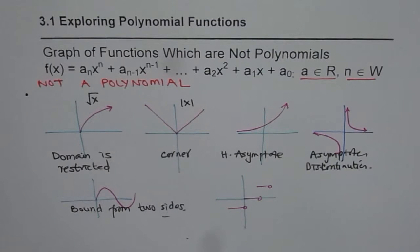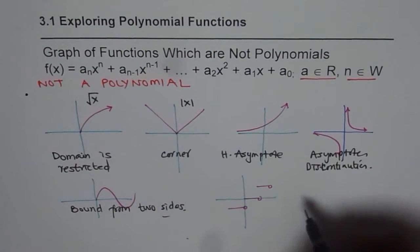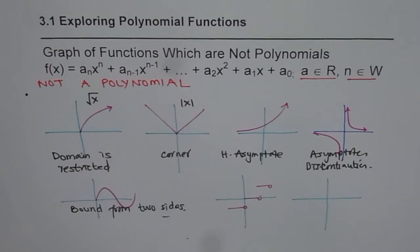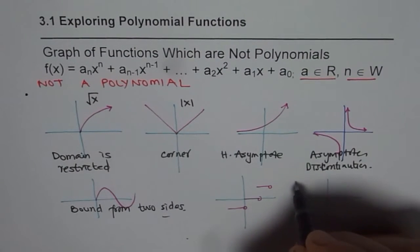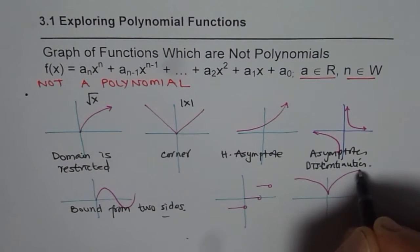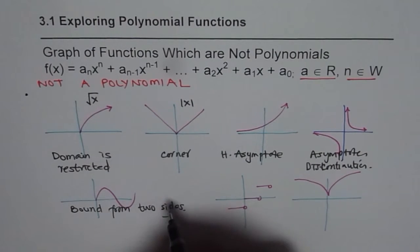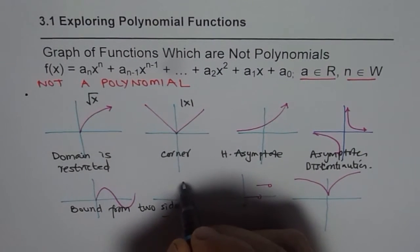So likewise, we may have different graphs which will not be the graph of a polynomial. For example, a radical function will have a cusp like this. Even cube root of x. Cube root of x is kind of very confusing. Let me just sketch it in between.